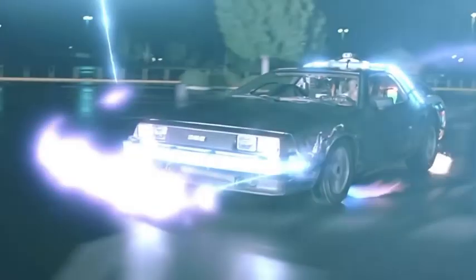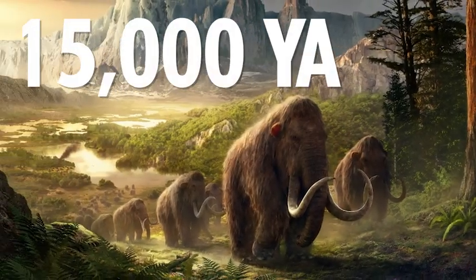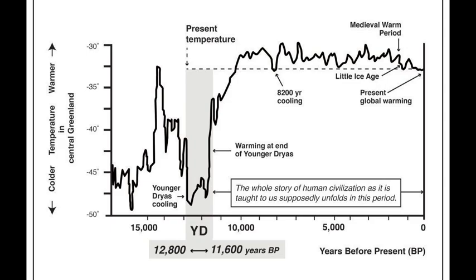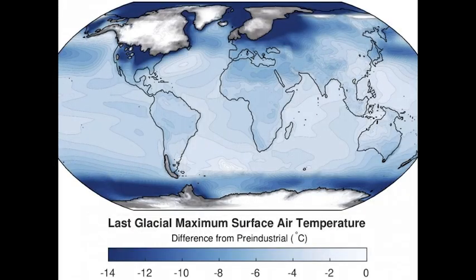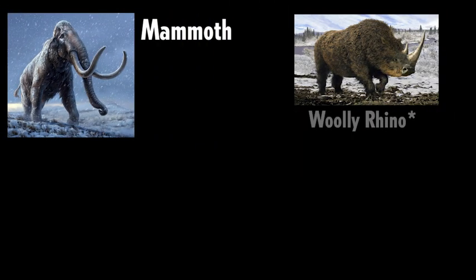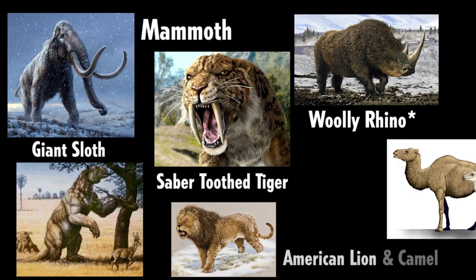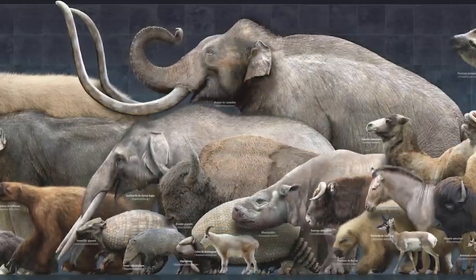Imagine we had a time machine and we can go back in time to 15,000 years ago, which would put us right before the end of the last ice age, when temperatures globally were far cooler — the average temperature was like 43 degrees. Massive megafauna like the mammoth, hairy rhino, saber-toothed tiger, giant sloth, the American lion and camel, and many other gigantic mammals roamed the Americas and the rest of the planet.